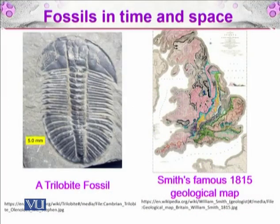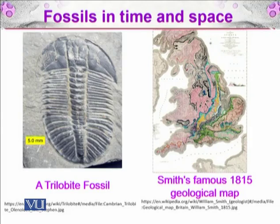On the left side of the picture in this slide, you can see a trilobite fossil. The trilobite was an earlier shelled organism, which is why its fossil remains were preserved. On the right side, you can see Smith's famous 1815 geological map. During his canal surveys, Smith also worked in the field of paleontology, discovering different layers with different types of fossils, and he categorized these layers across different areas using different colors on the map.